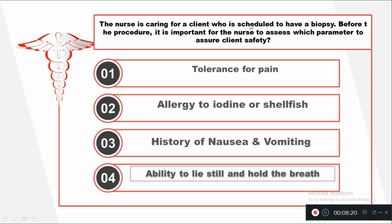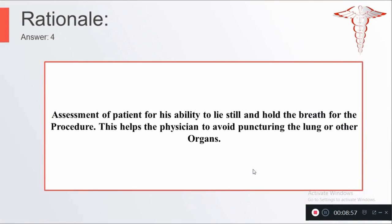Question number ten: The nurse is caring for a client scheduled to have a biopsy. Before the procedure, it is important for the nurse to assess which parameter to ensure client safety? Option one: Tolerance for pain. Option two: Allergy to iodine or shellfish. Option three: History of nausea or vomiting. Option four: Ability to lie still and hold the breath. The right answer is ability to lie still and hold the breath, because this helps the physician avoid puncturing the lung or other organs.